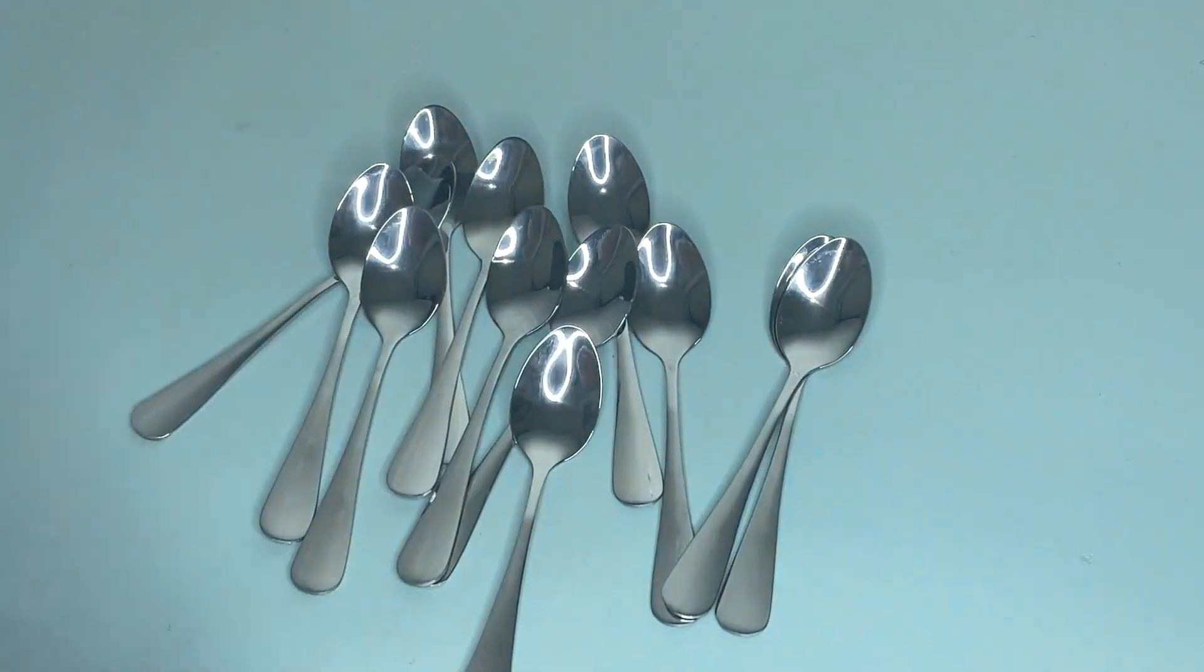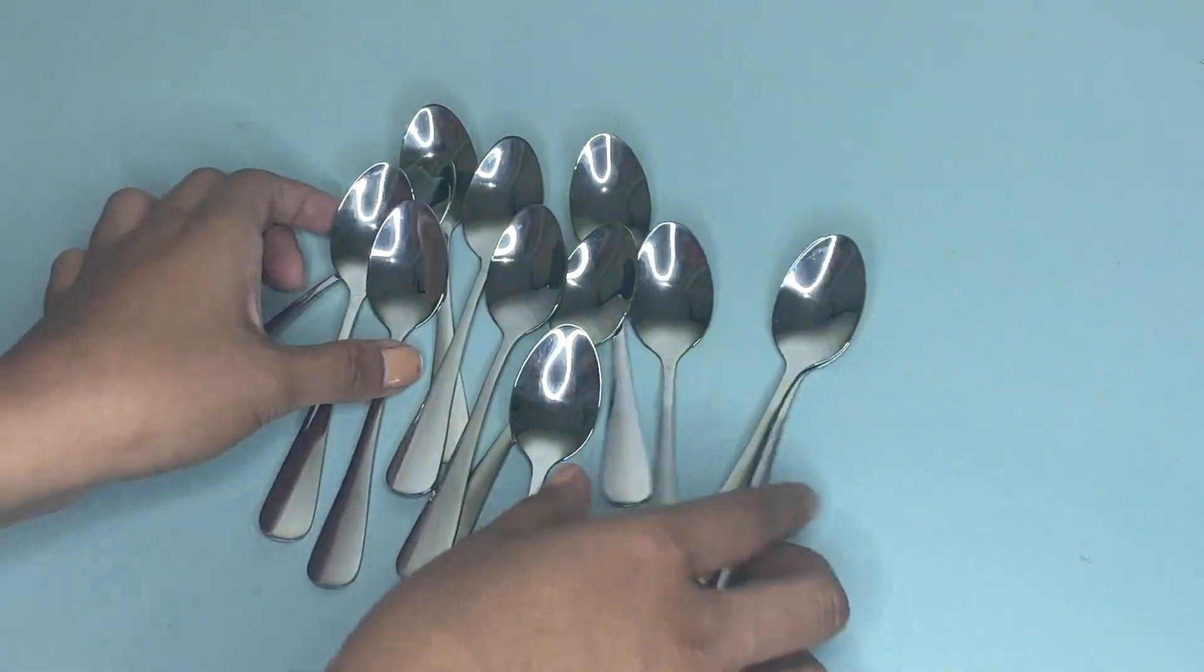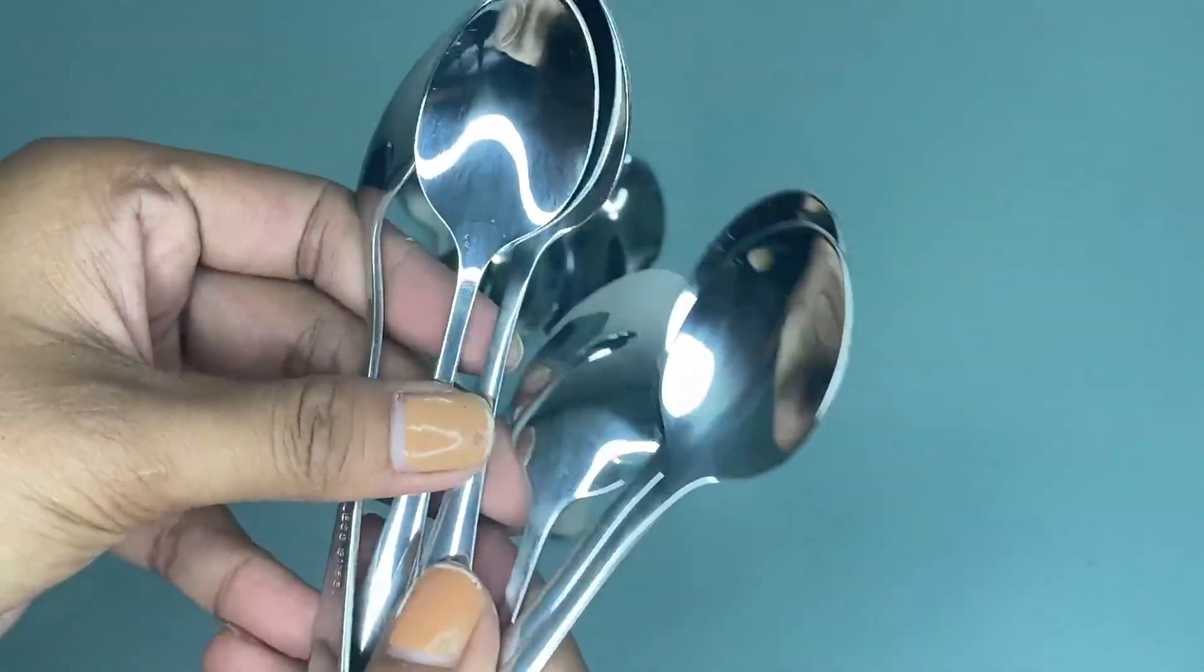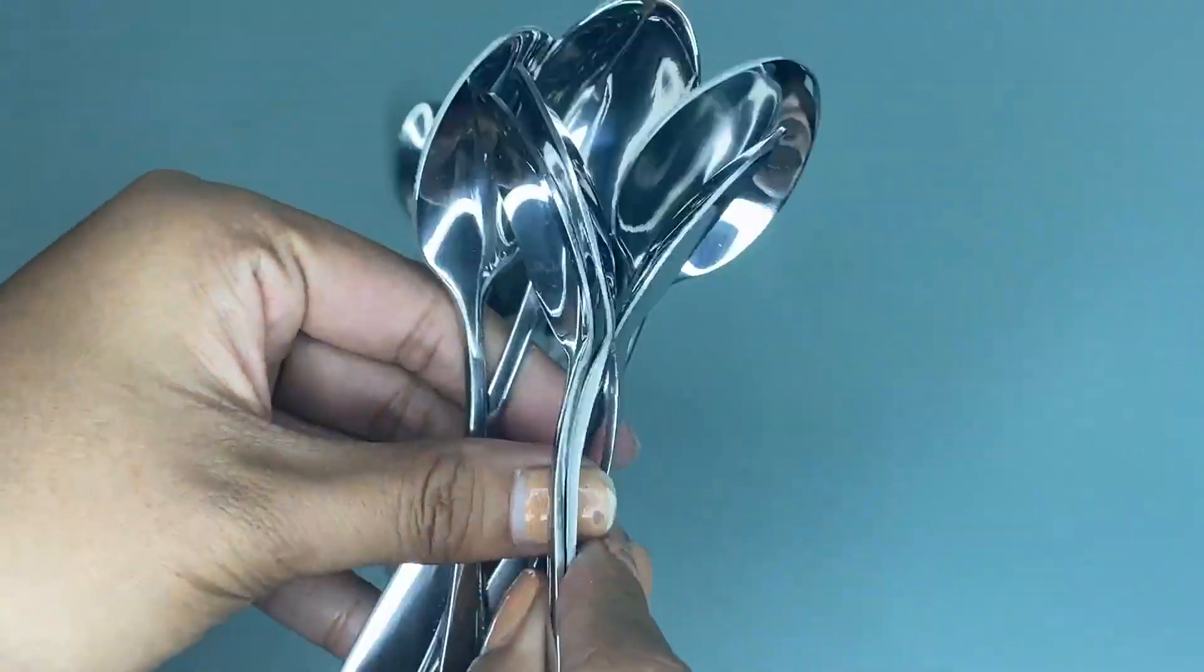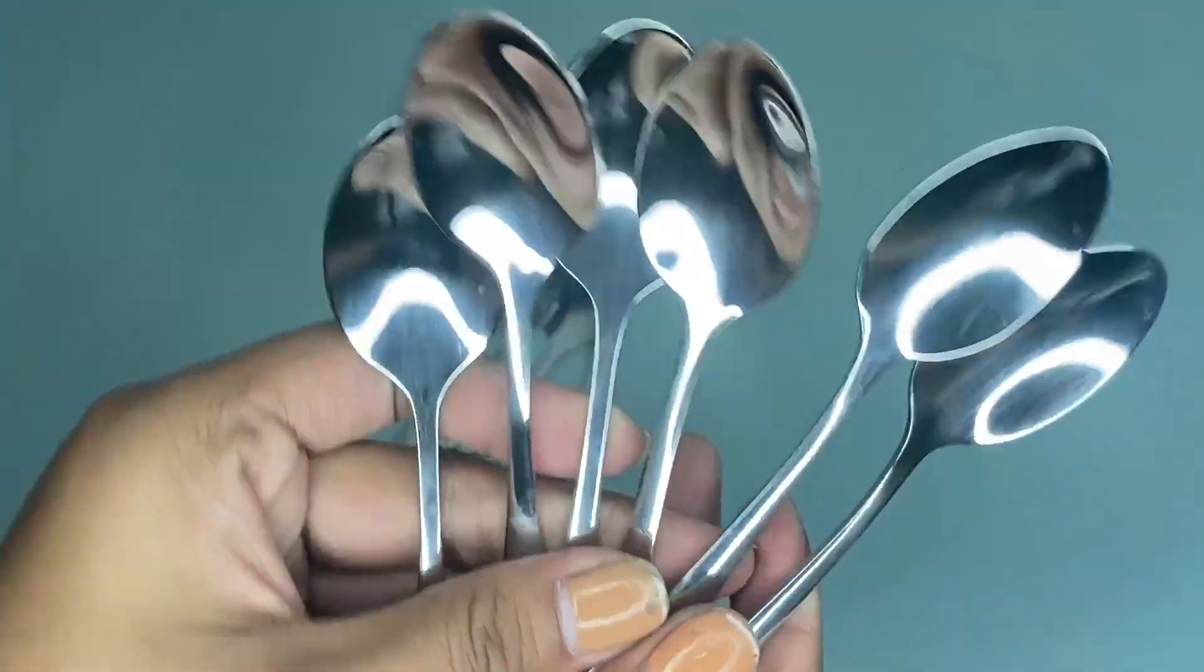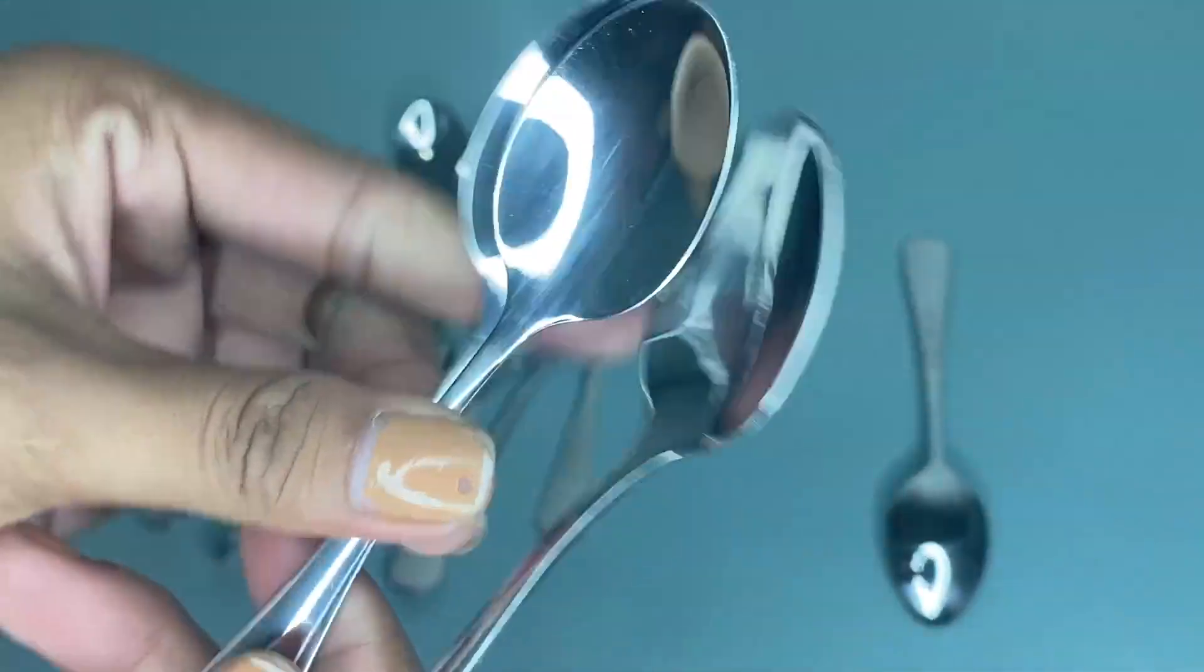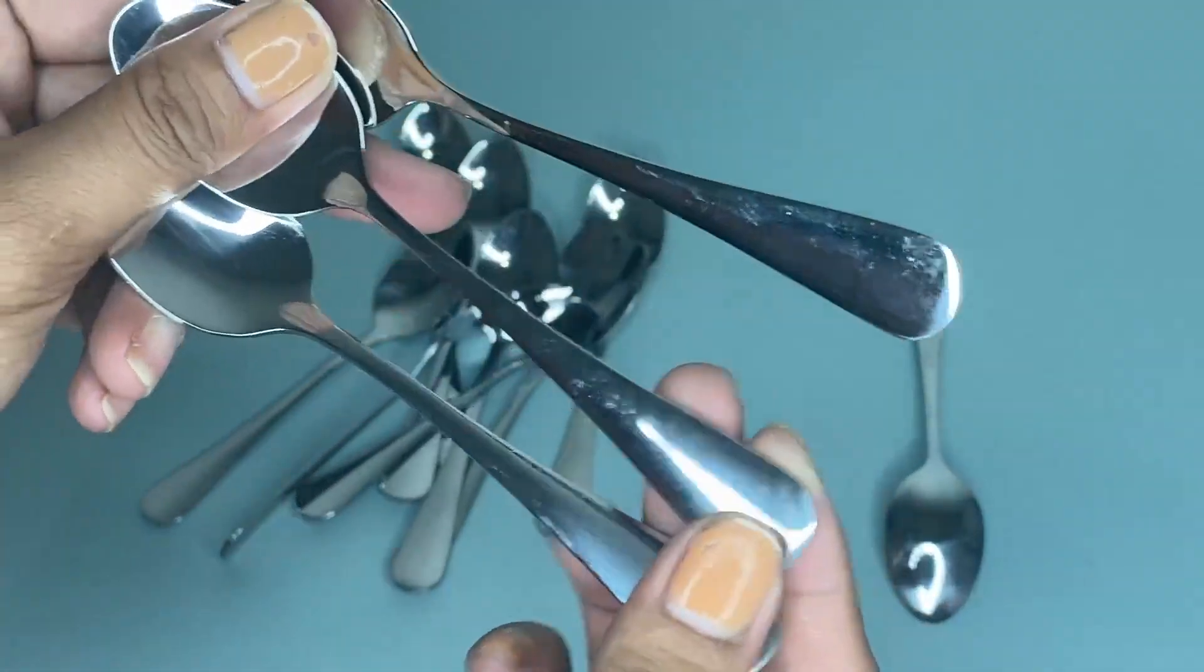Hi guys, today I'm going to share my honest review about this Demetaste espresso spoon. As you can see, we have the spoons here and the package comes with 12 small spoons. Each spoon is made of stainless steel and has a measurement of 0.98 by 4.7 inches.